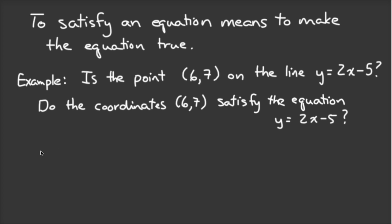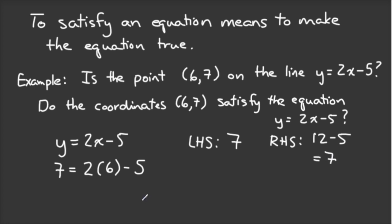In both situations, or both types of questions, I'm asking the same thing. I'm going to substitute 6 and 7 into Y equals 2X minus 5 and then see if it makes the equation true. So 7 is the Y coordinate, so I plug that in for Y and 6 is the X coordinate. I'm going to substitute that for X and then I look at the left-hand side. That one's pretty easy because the left-hand side, there's no calculations. It's equal to 7. And the right-hand side is going to be equal to 12 minus 5 and 12 minus 5 is equal to 7. So because the left-hand side equals the right-hand side, therefore 6, 7 is a point on the line Y equals 2X minus 5.